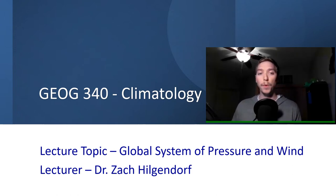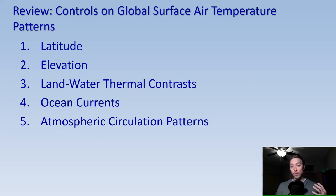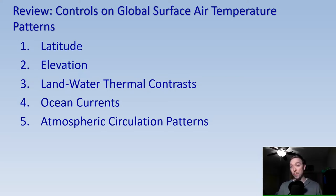So let's start with a little bit of review. Let's first review our controls on global surface air temperature patterns. We talked about latitude and the influence of latitude — the incoming solar radiation or insolation generated by our sun that is intercepted by Earth. Those rays of the sun are traveling through different amounts of atmosphere at different angles. The areas of the most direct insolation — we call the sub-solar point — that's where the rays of the sun are coming in at 90 degrees, and that only fluctuates between 23.5 degrees north, the Tropic of Cancer, and 23.5 degrees south, the Tropic of Capricorn.